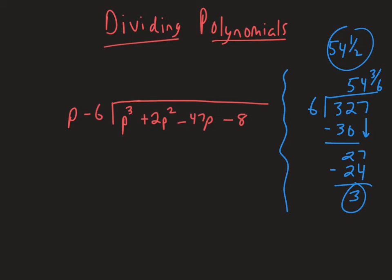But technically what happens is the actual numerical value would be that 3 over the 6, so we would actually write this as 54 and 3 sixths is the same as 1 half. So that would be how you do long division just using numbers as a review. So with polynomials, it's the exact same thing. It just kind of feels different, but what we're doing is we're looking at how many times does that p go into p cubed. So p goes into p cubed, p squared times, because p times p squared is p cubed.